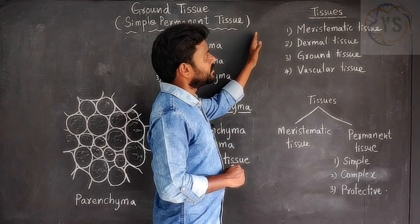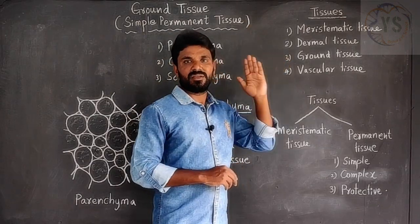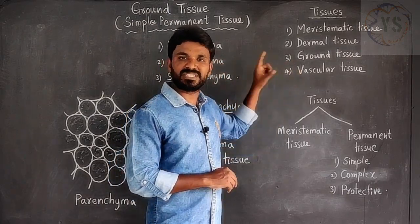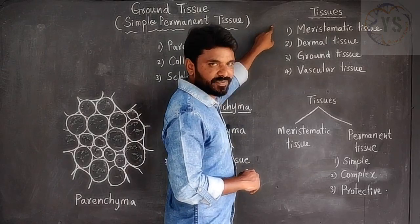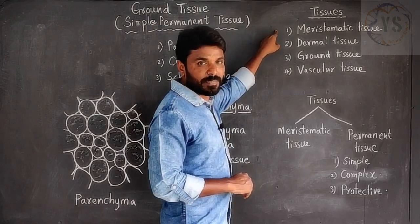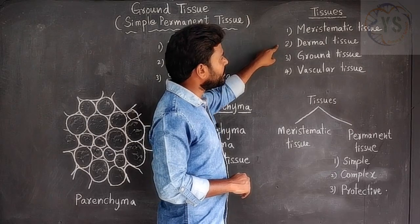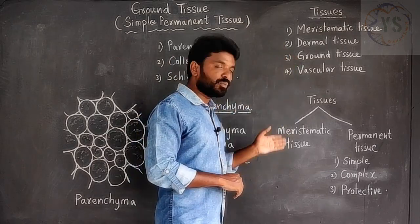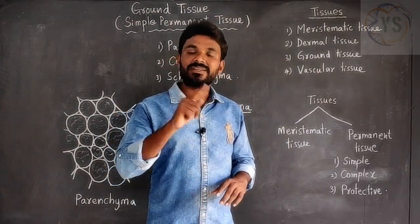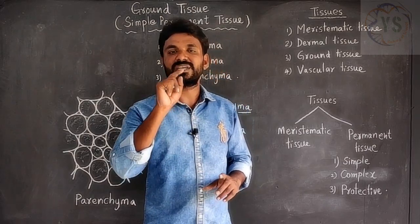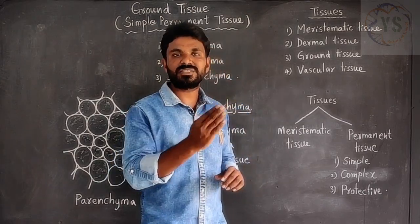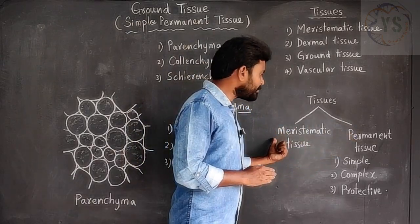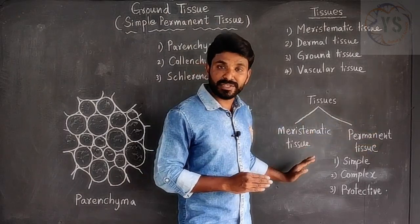According to the first classification, done based on structure and functions, the tissues in plants are of four kinds: meristematic tissue, dermal tissue, ground tissue, and vascular tissue. The second classification is based on cell division capacity, and under it the tissues in plants are of two kinds: meristematic tissues and permanent tissues.